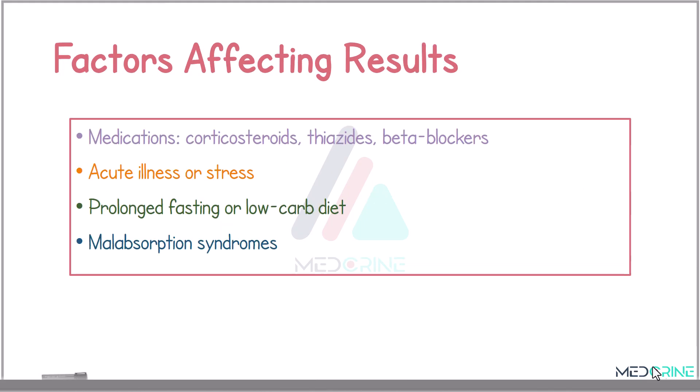Factors that can affect oral glucose tolerance testing include medications such as corticosteroids, thiazide diuretics, and beta blockers; the presence of an acute illness or stressor; prolonged fasting or a low-carbohydrate diet; and malabsorption syndrome.